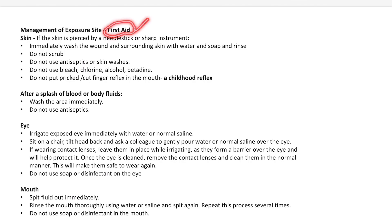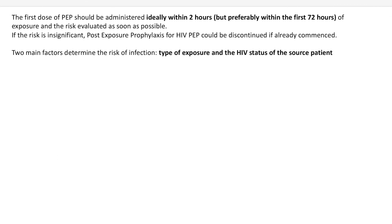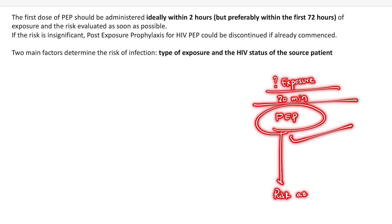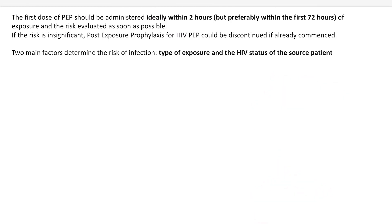These are the first aid measures for management of the exposure site. Regarding PEP administration: if there is a risk exposure and an intern comes to you within 30 minutes of getting exposed, you can start post-exposure prophylaxis immediately, then do the risk assessment. Irrespective of the exposure status or the source status, it is important to start the PEP regimen immediately — at least the first dose — then do the risk assessment. Based on it, if it turns out to be low risk or no risk, you can stop the PEP regimen.